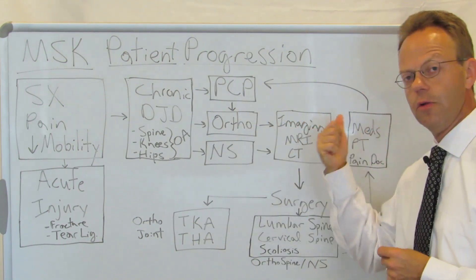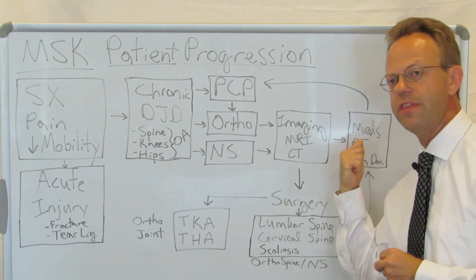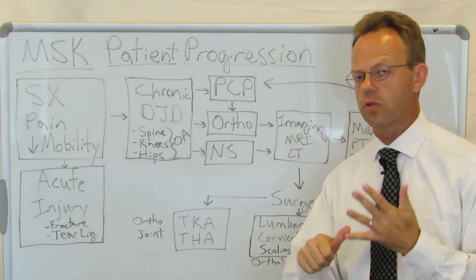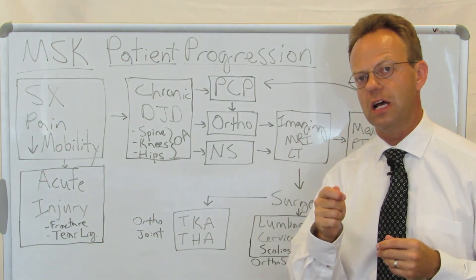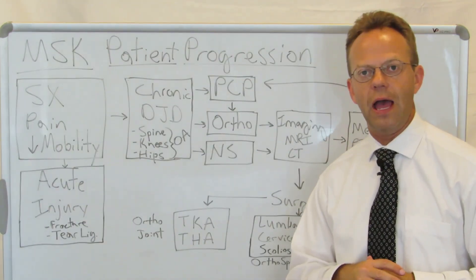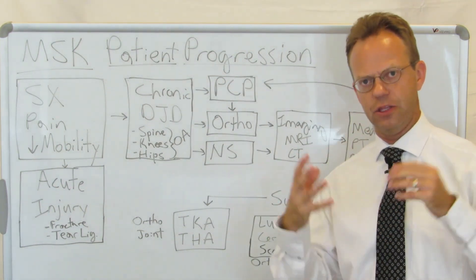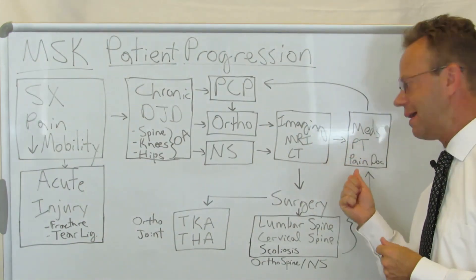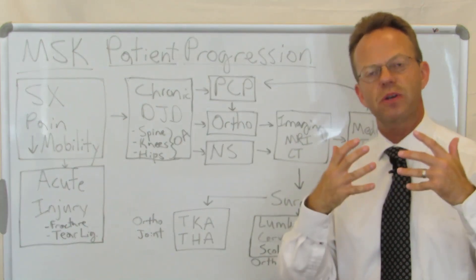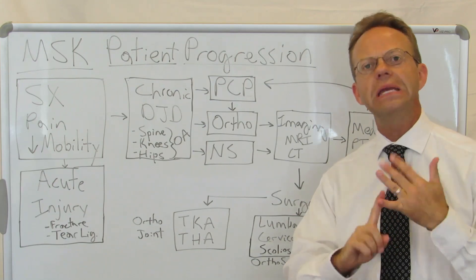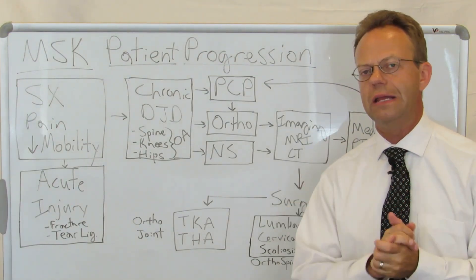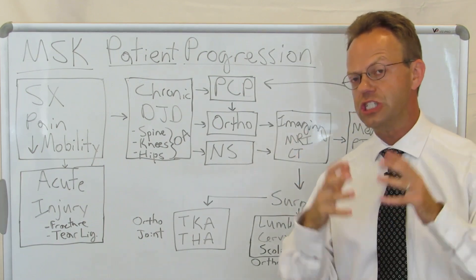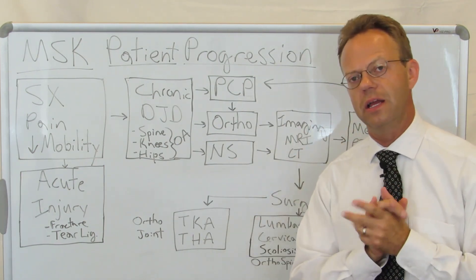After imaging is done, there's a decision tree of whether to pursue medication therapy, physical therapy, or pain management. Medication therapy includes in-office injections — orthopedists or neurosurgeons commonly do in-office steroid injections into the knee or hip, and also hyaluronic acid injections, which act as a lubricant within the joint. Pain management is actually a subspecialty of anesthesia, though PM&R — physical medicine and rehabilitation — doctors also perform pain management. They will do joint injections, including injections of the cervical and lumbar spine.